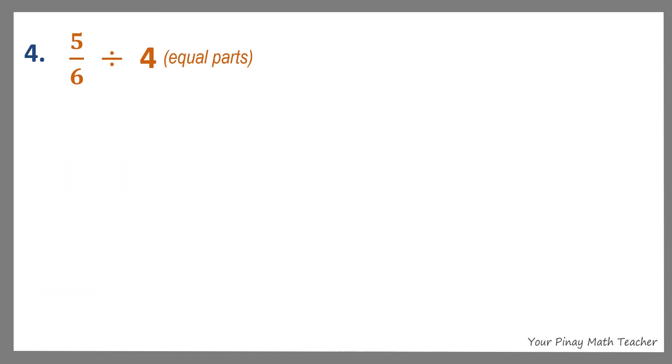Number 4: 5 sixths divided by 4. This may represent 5 out of 6 boxes of fruits being shared equally by 4 people. This also answers the question, what fraction of the whole is each of the 4 equal parts?